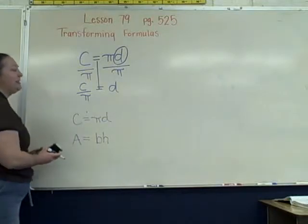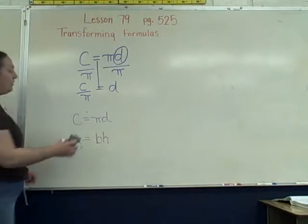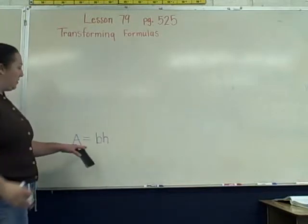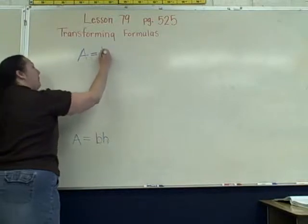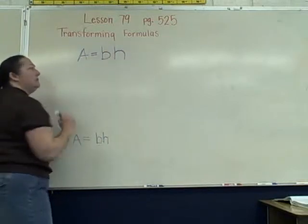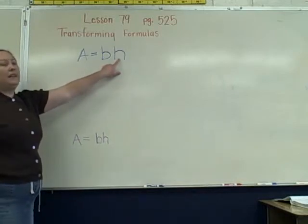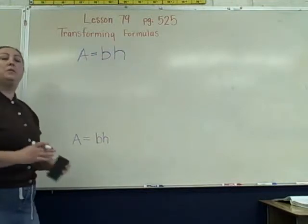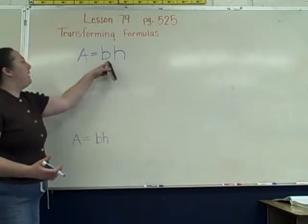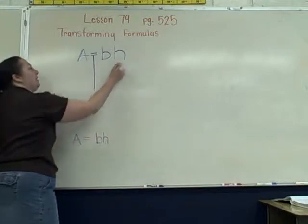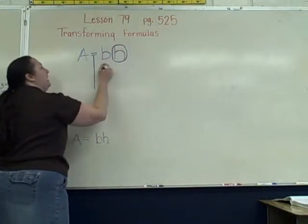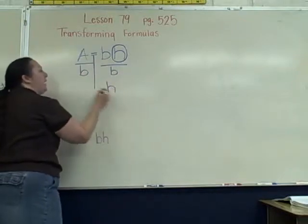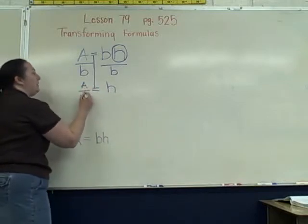The last example is the formula for the area of a rectangle, parallelogram, or rhombus: area equals base times height. If I want to get height by itself, I move the base over. Recognizing that base and height are multiplying, I use division. I split at the equal sign, identify the variable to isolate, and divide both sides by b, getting h equals a over b.